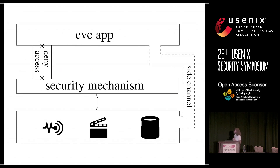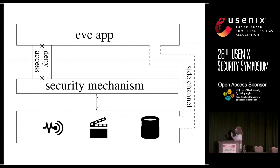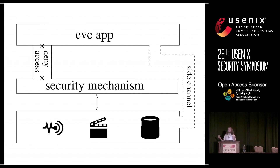A side channel involves just one app. Eve app has also been denied access through the security mechanism, but there exists some side channel to access the same information — maybe another way of accessing the same or similar information that's just as good, just as useful. The point is that this side channel is not monitored by the security mechanism, and therefore whatever policy should be enforced is not being enforced.